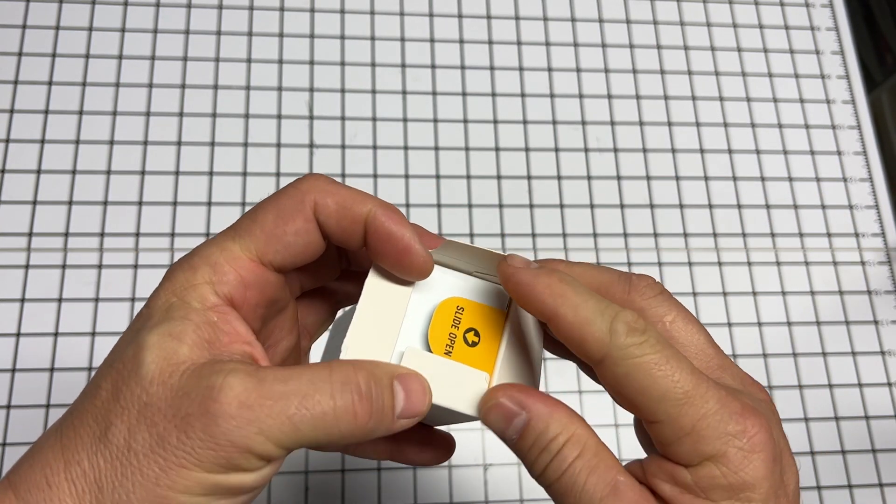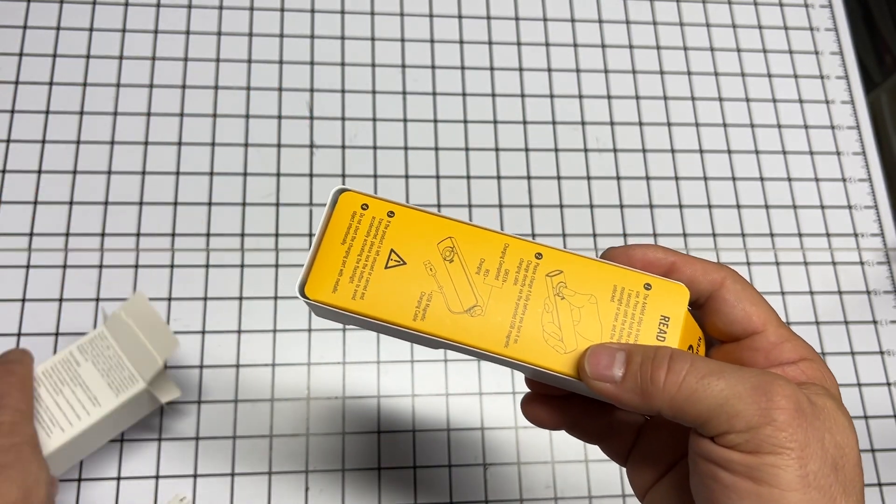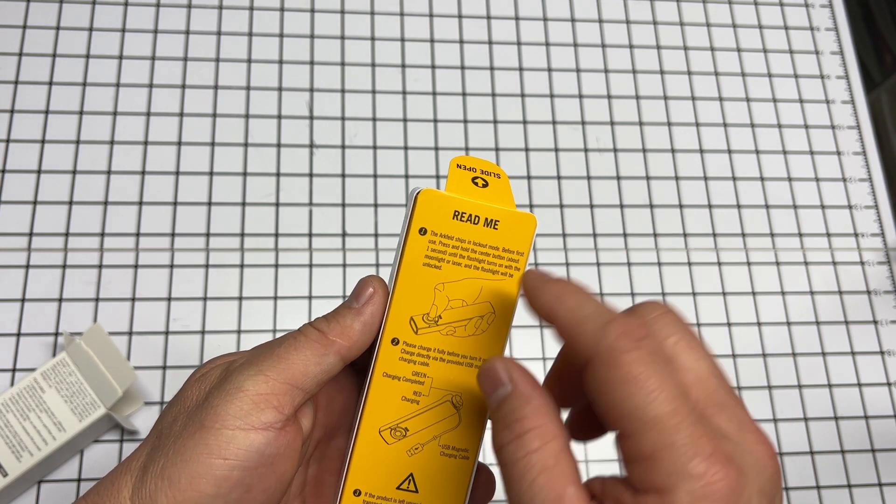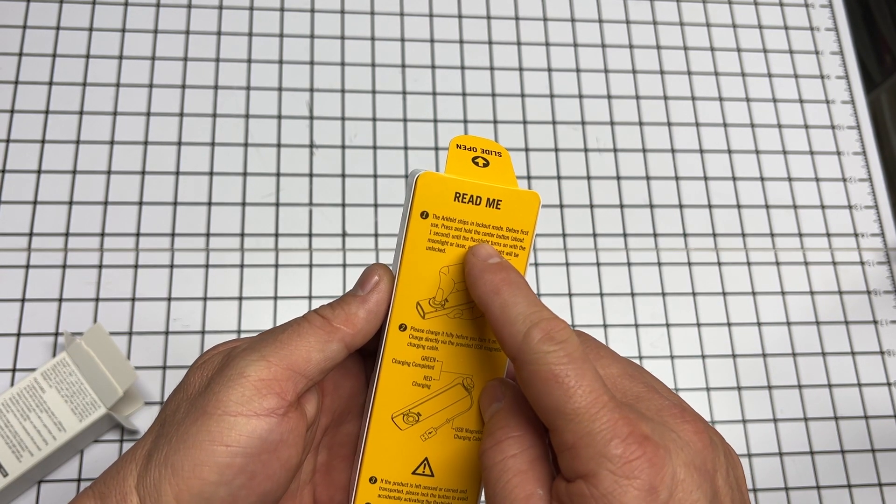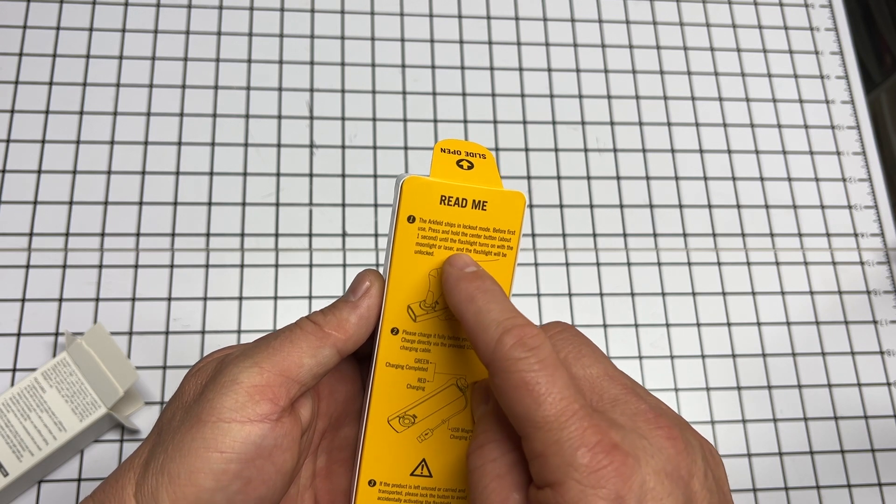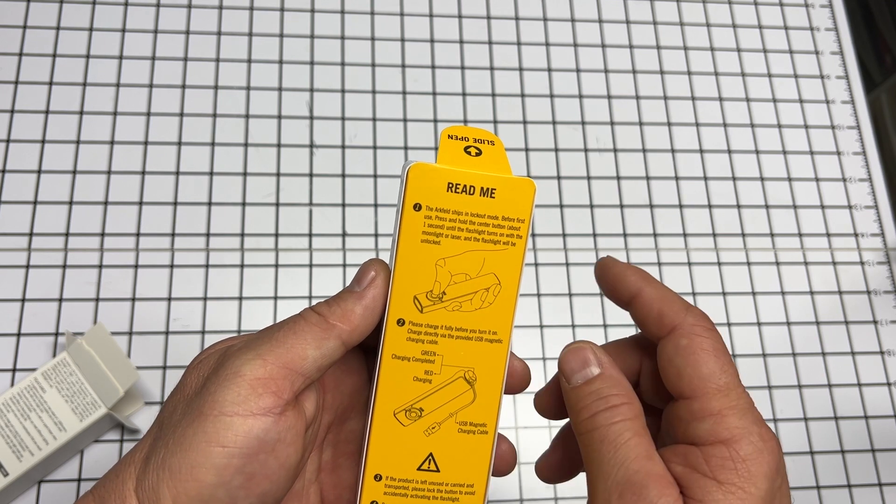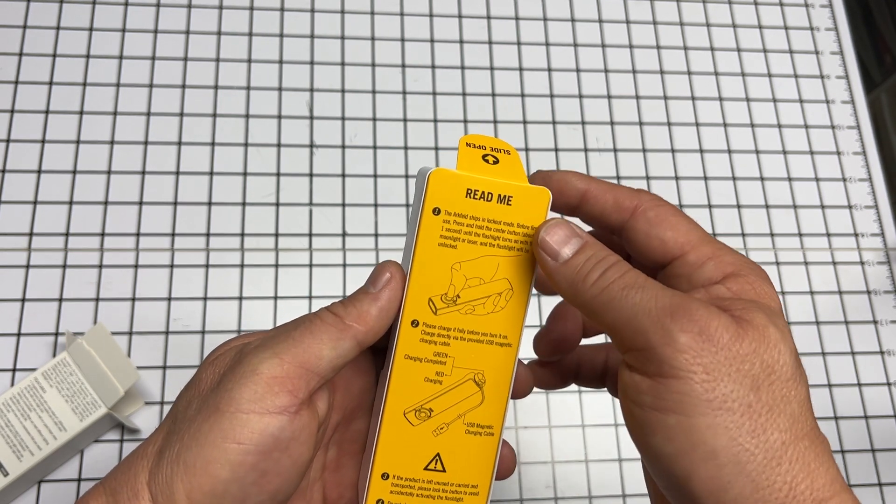While I was doing some investigation, I found this is made out of a block of aluminum and they mill it. 'Read me first: Arkfeld lock mode - before first use, press and hold the center button about one second until the flashlight turns on with the moonlight or laser and the flashlight will be unlocked.' Okay, now this is cool.